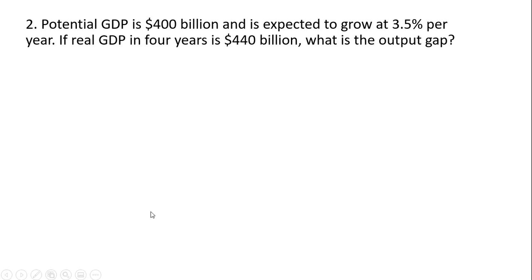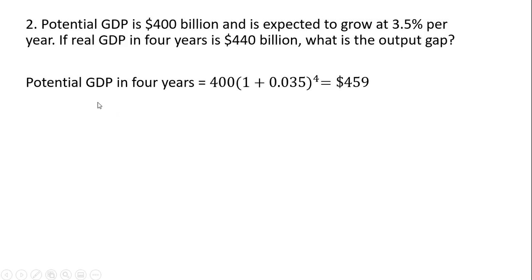In problem two, potential GDP is $400 billion and is expected to grow at 3.5% per year. If real GDP in four years is $440 billion, what is the output gap? First, we need to solve for potential GDP in four years. So we're going to do the following: 400 multiplied by 1 plus the growth rate, all raised to the power of 4 — where this power of 4 represents four years, n periods where n is 4. And doing the math, we get $459 billion as the expected value for potential GDP in four years.